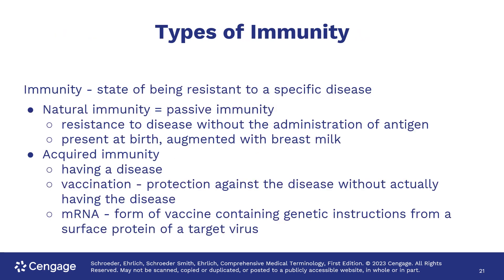There are several types of immunity. Natural immunity is passive immunity — it's what you're born with, the immunity you get from your mother that is enhanced when the baby is breastfed. Acquired immunity is the immunity you get by getting the disease or by getting vaccinated, which produces an immune reaction in the body without actually getting the disease.